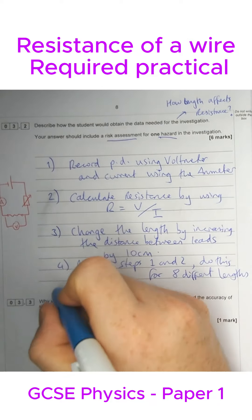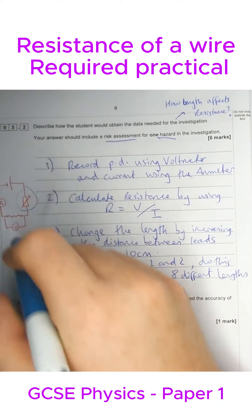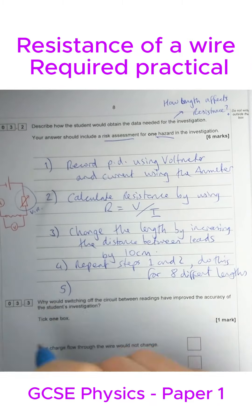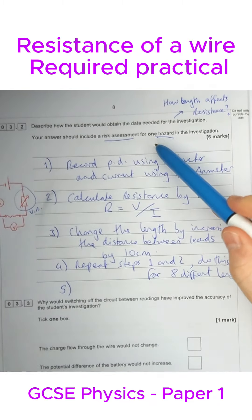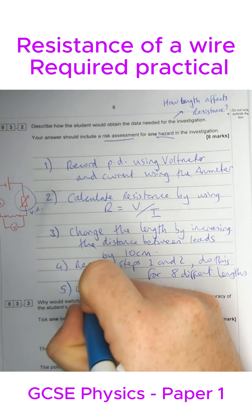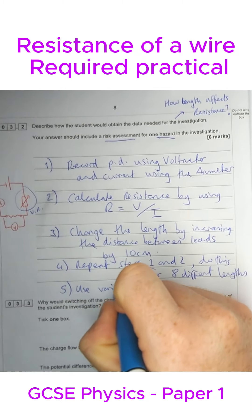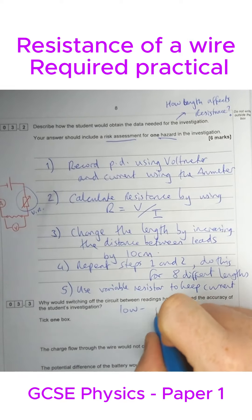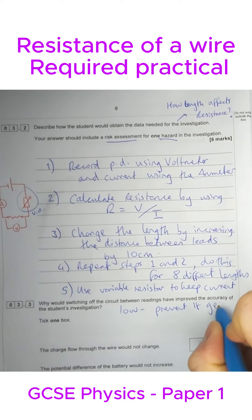Now you might be wondering what this thing is here in my investigation. This is a variable resistor. The whole point of this is to change the resistance in the circuit, and that's where one of our risk assessments could come in. We could say use the variable resistor to keep the current low to prevent it getting hot.